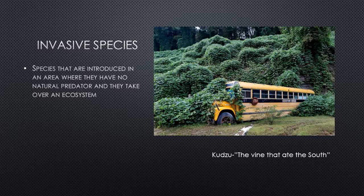Kudzu was introduced in the Southeast in 1883 at the New Orleans Exposition. It was marketed as an ornamental plant for shading porches, then distributed as high-protein cattle fodder and a cover plant to prevent soil erosion during the Dust Bowl, cultivated by the Civilian Conservation Corps. But without a natural predator, it continues to grow and suffocates anything else trying to grow underneath it.